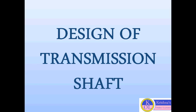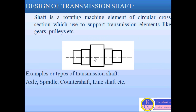Today I'm going to discuss the design of transmission shafts. A shaft is a rotating machine element of circular cross-section, generally used to support transmission elements like gears and pulleys. As shown in the diagram, a shaft always has maximum diameter at the middle portion and minimum diameter at both its ends. This is the diagram of a transmission shaft.